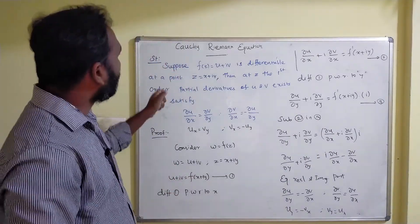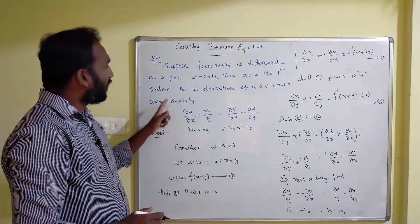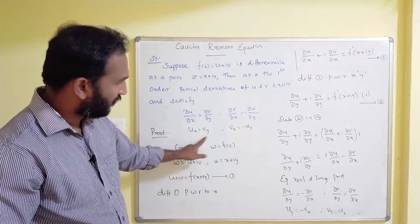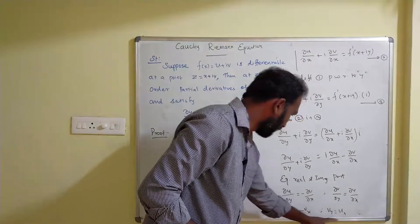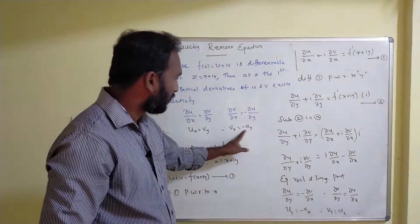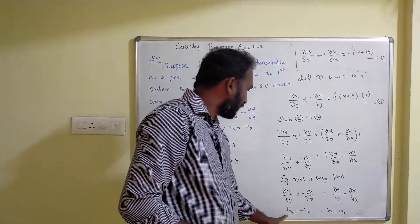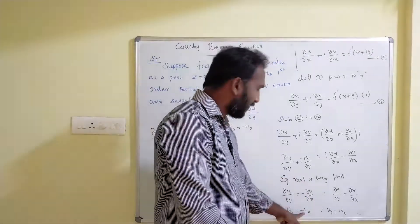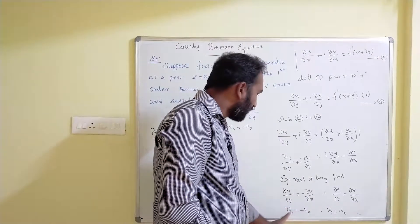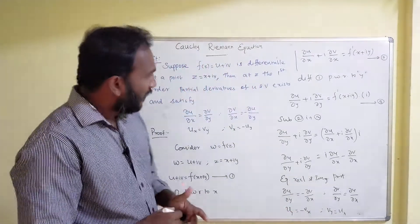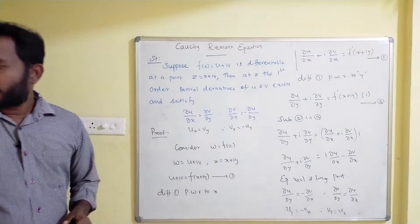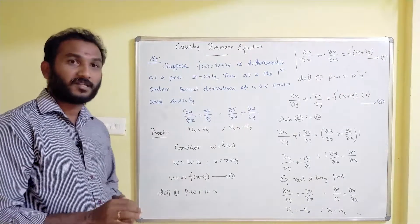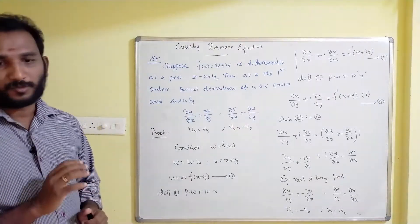Hence the Cauchy-Riemann equation for the Cartesian coordinate is proved: u_x = v_y and v_x = -u_y. Next, we are going to prove the Cauchy-Riemann equation for the polar coordinate.